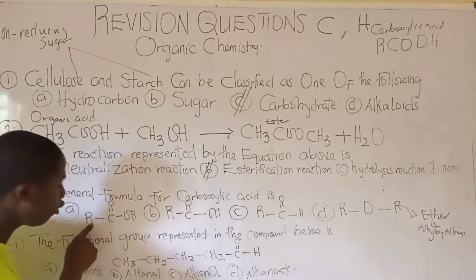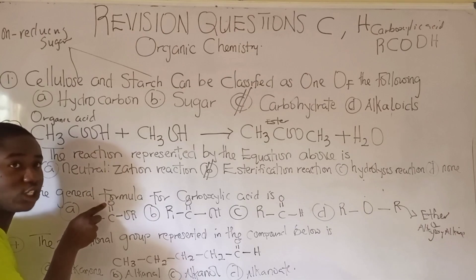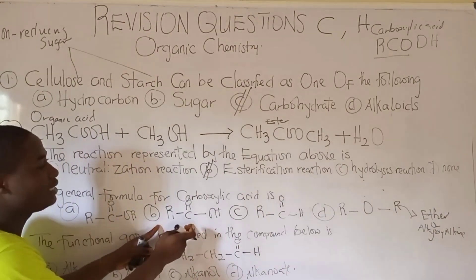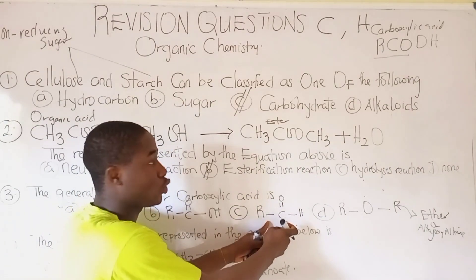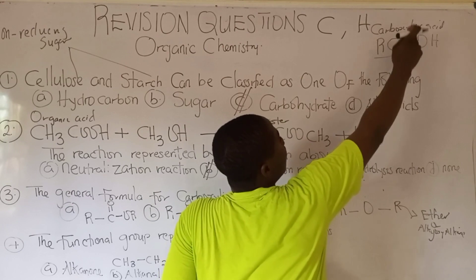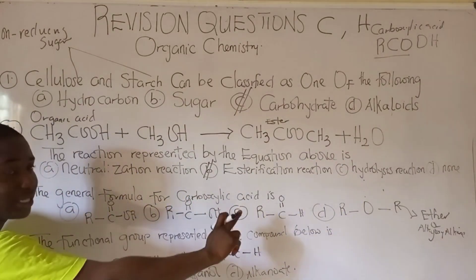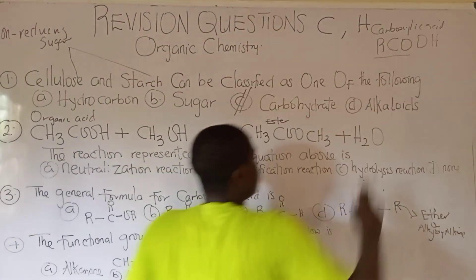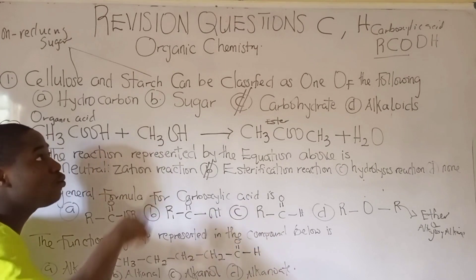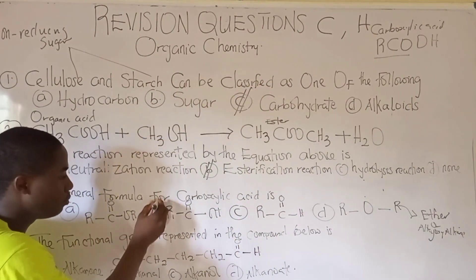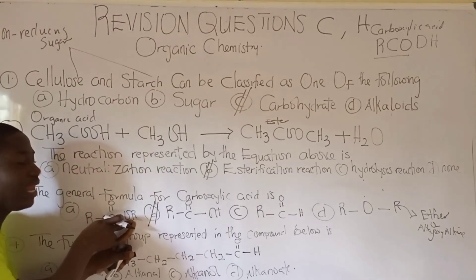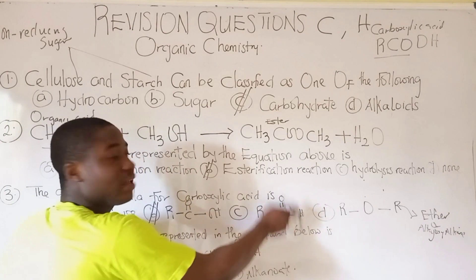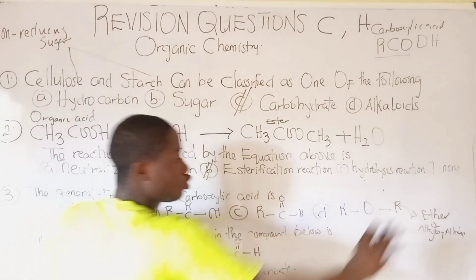Looking at the structure carefully, the carbon bonds to a double-bond oxygen, and then to another oxygen and hydrogen. The option that matches the general formula RCOOH is option B, because option B has hydrogen at the end. Option A is an alkanol or ketone, option C is an aldehyde, and option D is an ether or alkoxyalkane.